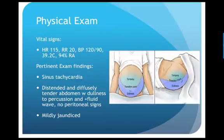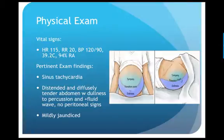On exam, his heart rate is 115 and he's febrile at 39.2 with sinus tachycardia. His belly is distended, diffusely tender, with some dullness to percussion and a possible fluid wave. He has no peritoneal signs, no focal abdominal tenderness, and some mild jaundice.